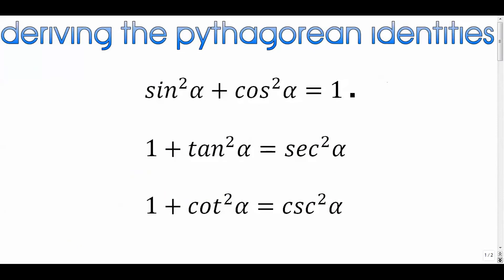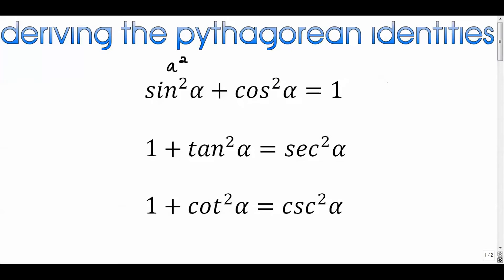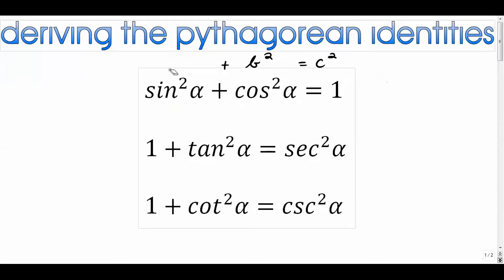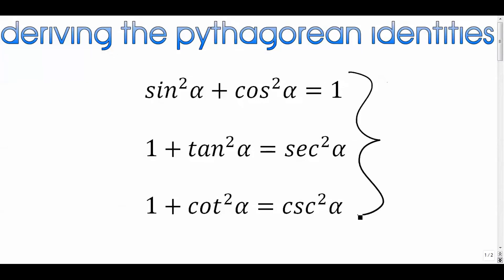We are ready to dive into trigonometric identities. I have a three-part series coming, but before that I'd like to go through this video on how to derive the Pythagorean identities — the identities that involve the Pythagorean theorem. The main one looks like a² + b² = c², and the other two are very similar, so we'll figure out how to get all three.